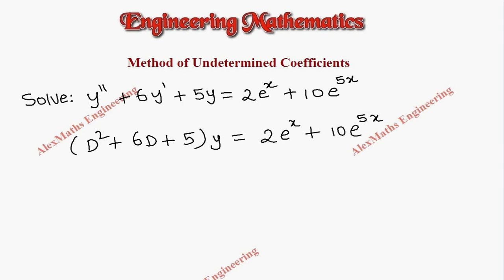Now, the auxiliary equation is m squared plus 6m plus 5 equal to 0. So, m plus 1 into m plus 5 are the factors. From this, we get two values for m. One is minus 1, other is minus 5.